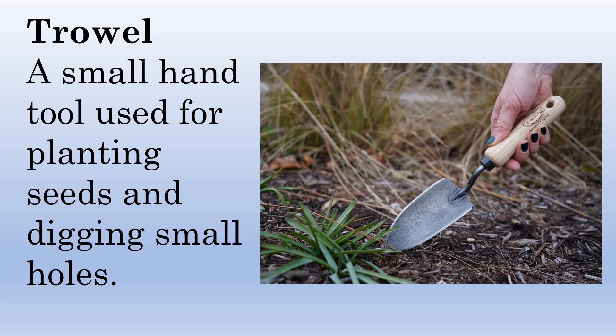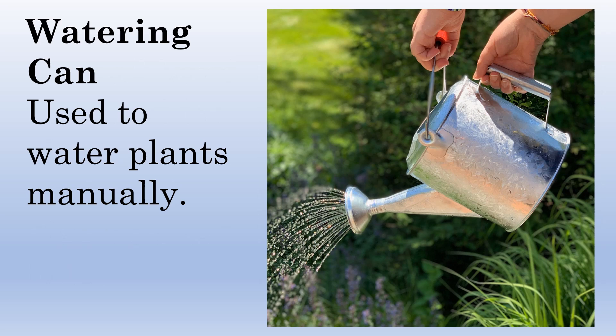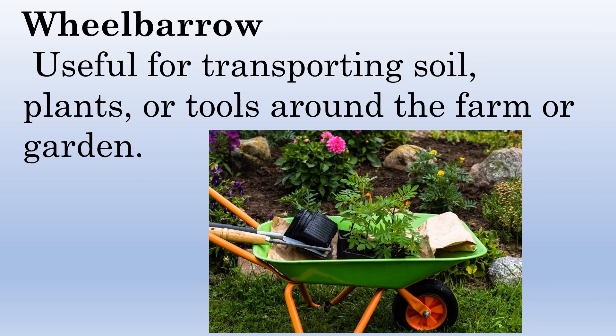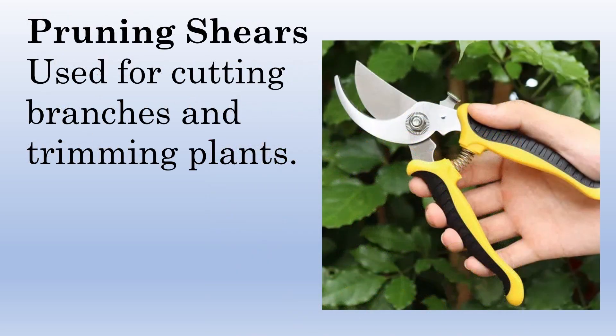Trowel — a small hand tool used for planting seeds and digging small holes. Watering can — used to water plants manually. Wheelbarrow — useful for transporting soil, plants, or tools around the farm or garden. Pruning shears — used for cutting branches and trimming plants.